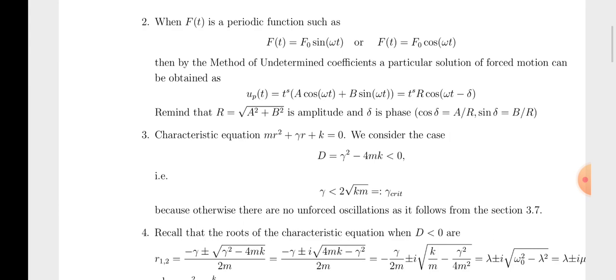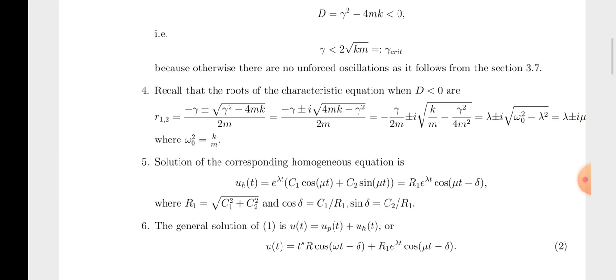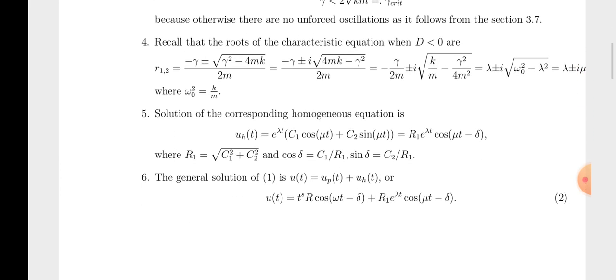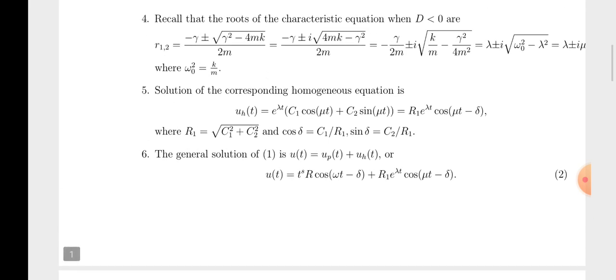The characteristic equation is m·r² + ζ·r + k = 0. The roots r₁ and r₂ are equal to [−ζ ± √(ζ² − 4mk)] / (2m). Taking plus and minus gives two roots. The solution of the corresponding homogeneous equation is u(t) = e^(λt) · [c₁·cos(μt) + c₂·sin(μt)]. The general solution is u(t) = u_p(t) + u_h(t).